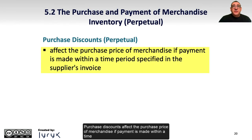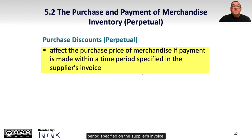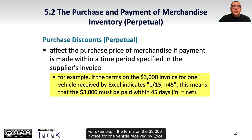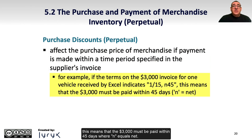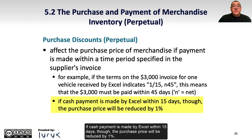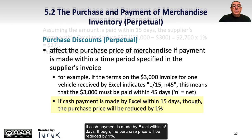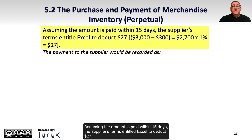Purchase discounts affect the purchase price of merchandise if payment is made within a time period specified on the supplier's invoice. For example, if the terms on the $3,000 invoice for one vehicle received by Excel indicate 1-15-N-45, this means that the $3,000 must be paid within 45 days, or N equals net. If cash payment is made by Excel within 15 days, the purchase price will be reduced by 1%.